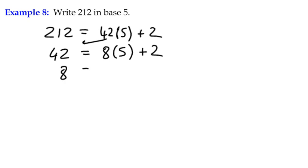Move the 8 over. Divide that by 5. And we've got 1. 5 divides into 8 one time, remainder 3. Remember, we only stop when the quotient is 0.